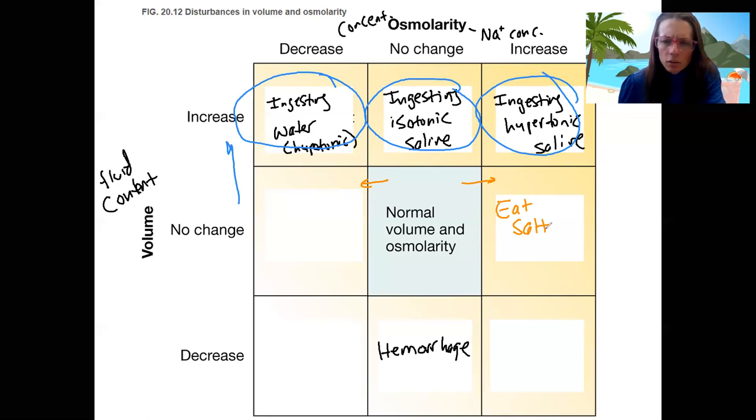We could decrease osmolarity with no change in volume. This is sweat loss and then replaced with plain water, because we've got an isovolumic situation and a loss of sodium. This isn't going to be what I focus on as much, but that's a possible thing that happens.